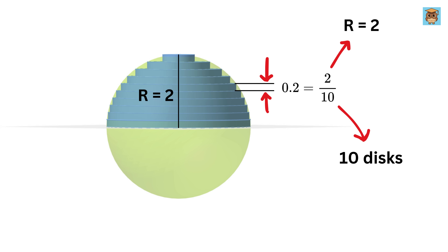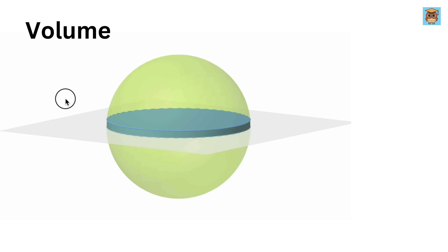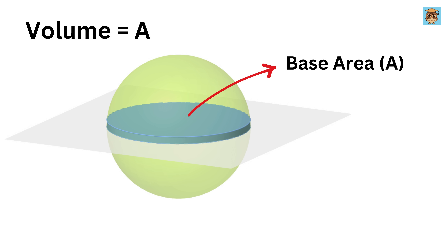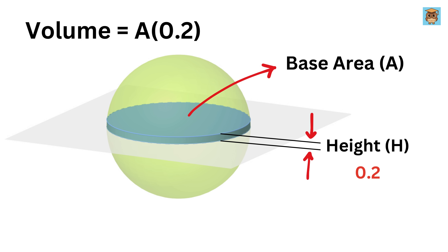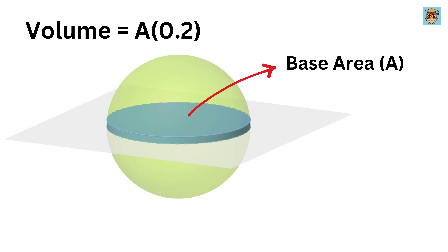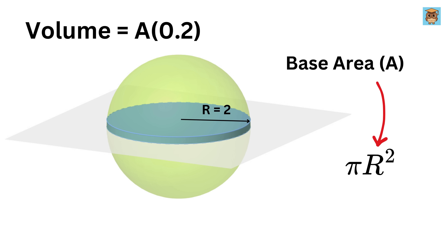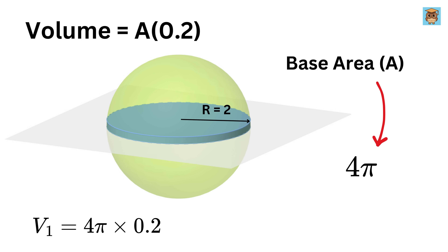Consider the first disk. Its volume will be the area of its base times its thickness of 0.2. The radius of this hemisphere is 2 units, so the area of its base is pi times r squared, or pi times 2 squared, which is 4pi. Therefore the volume of this disk will be 4pi times 0.2, or 0.8pi.